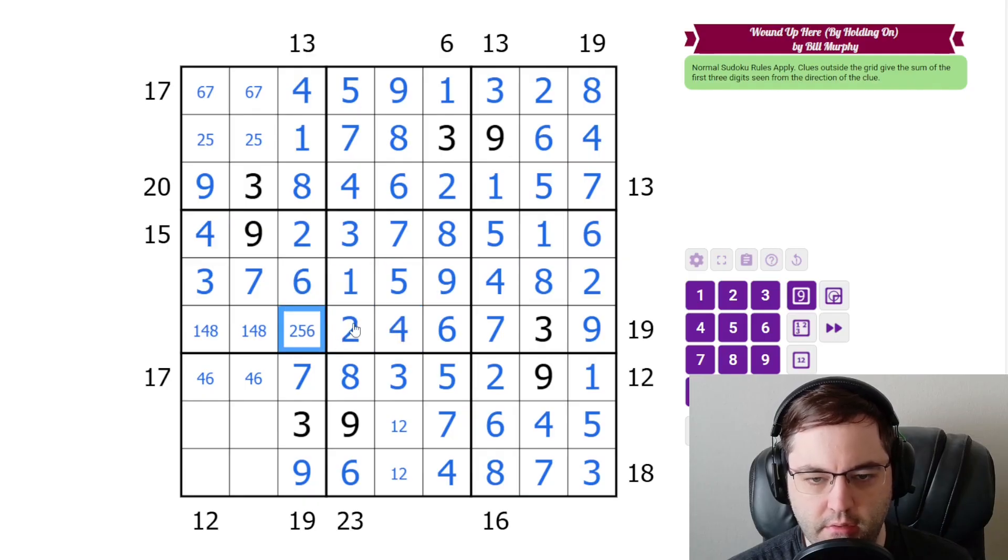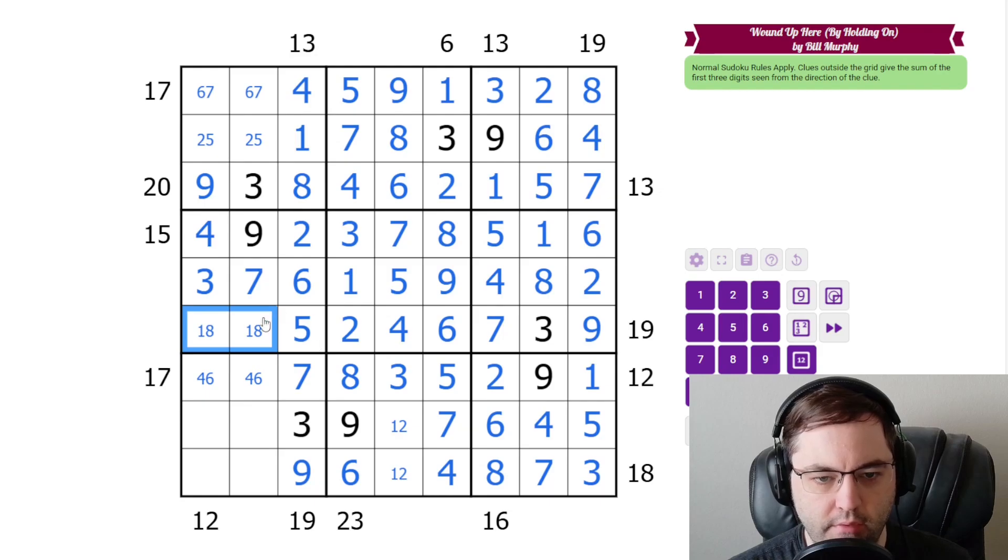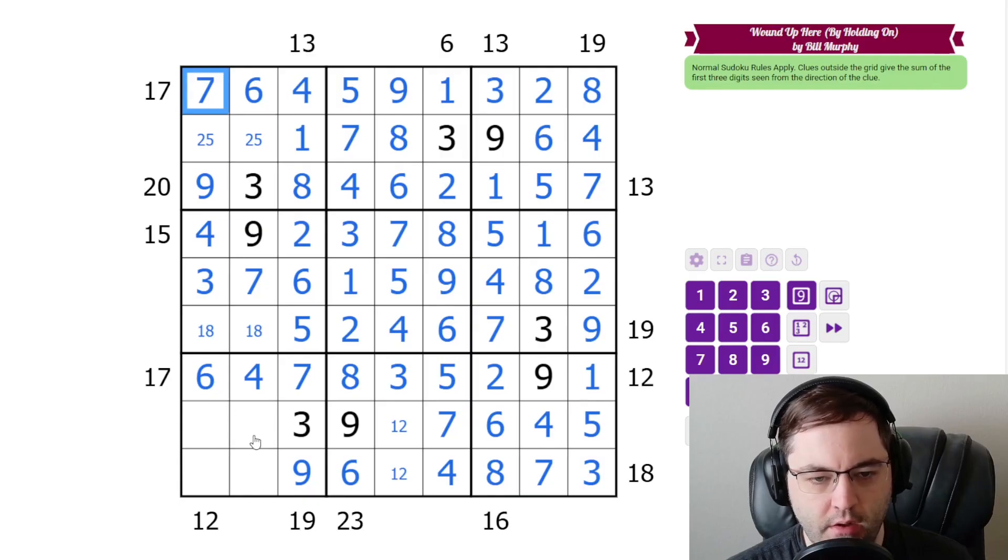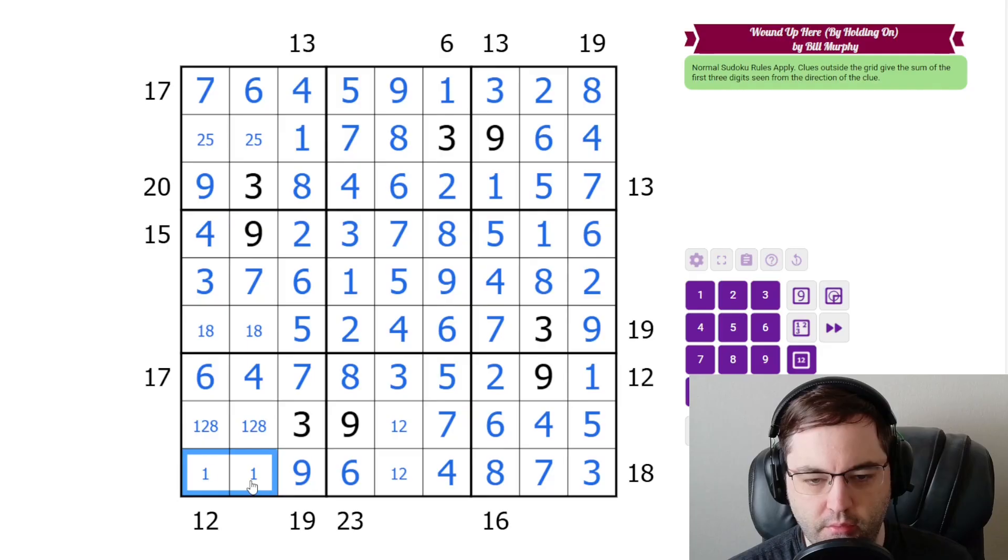And that's going to get us going in the middle. In fact, almost totally resolve everything there. The four gives us four, six. Again, having trouble typing the right digits. All right. Now we need to resolve this. These are one, two, eight. These are one, two, five.